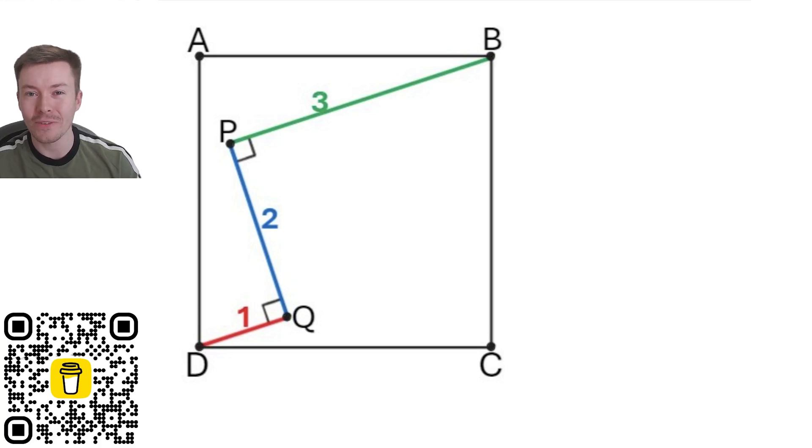Hi and welcome back to another Mr. Tybalt Maths video. This week's problem is working out the area of this square. As you can see, there's a red line inside the square that's got a length of 1, then there's a perpendicular line to that with a length of 2, and then another perpendicular line that goes to the opposite corner of that square with a length of 3.